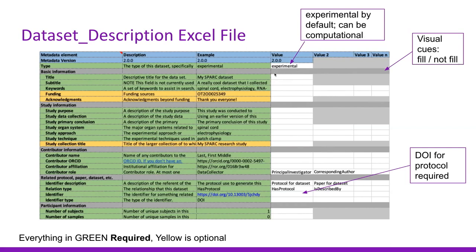The title and subtitle fields haven't changed. We're trying to put in some visual cues — we made some of these fields gray to indicate that you should not be filling them in, clarifying which places we expect investigators to fill in information and which they should not. The DOI identifier for a protocol will be required, so when you go to protocols.io, you will need to get a DOI for that protocol in order to cite it and submit for publication.